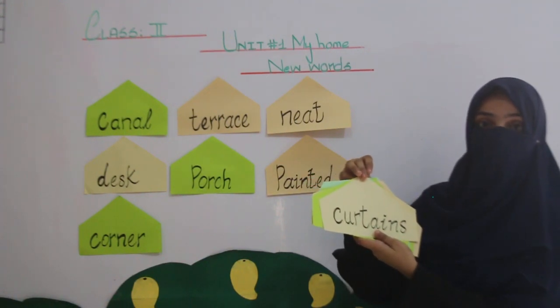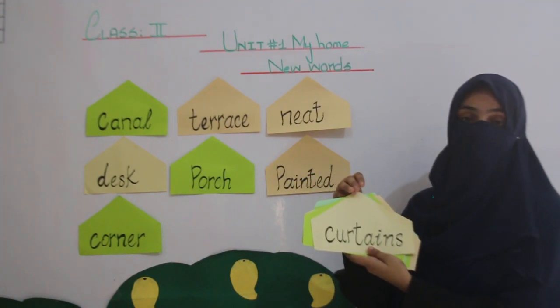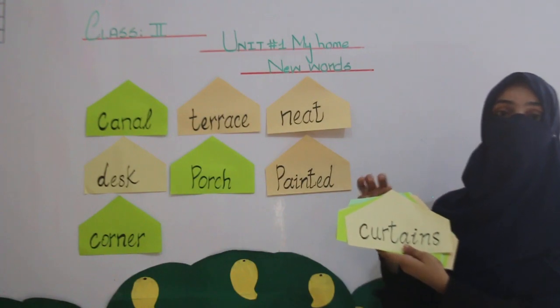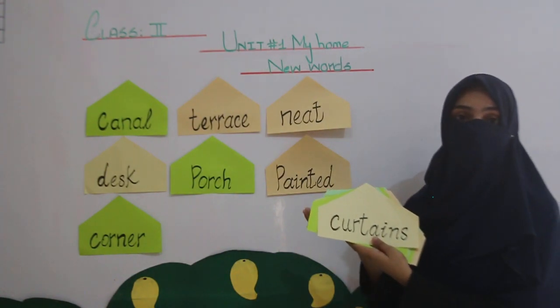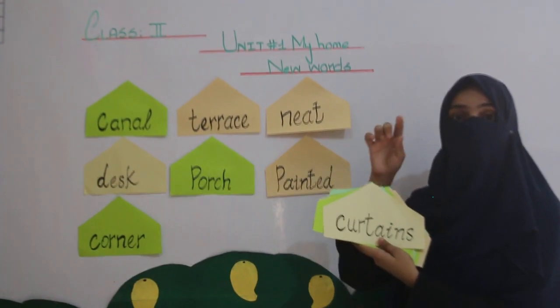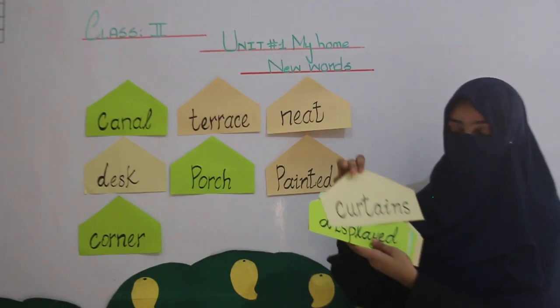Another word is Curtains. C-U-R-T-A-I-N-S, Curtains — basically aapke har kamre mein maujud unha hain, jo window par mostly hang kiye jaate hain.